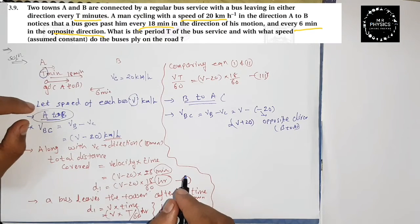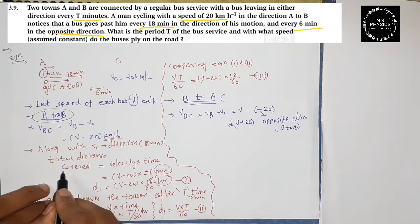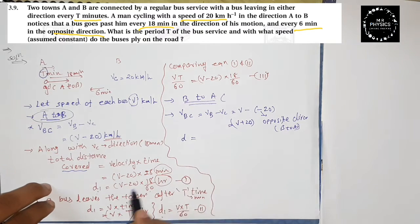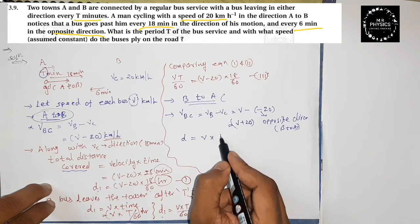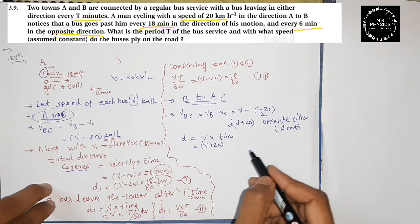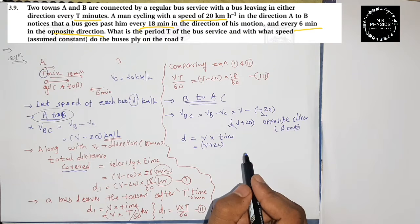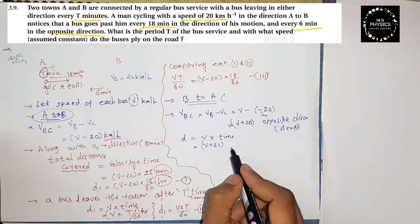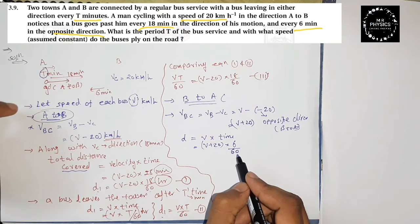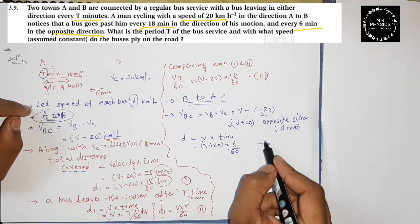So the relative speed is V plus 20. The total distance covered D equals velocity into time: (V plus 20) into 6 by 60, because in the opposite direction the bus passes every 6 minutes. Convert to hours by dividing by 60. This is equation number 4.